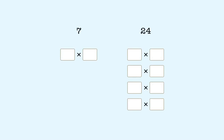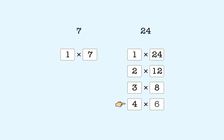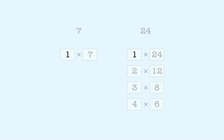Let's look at one more example. Figure out the largest number that is a factor of both 7 and 24. 1 is the greatest common factor of 7 and 24.